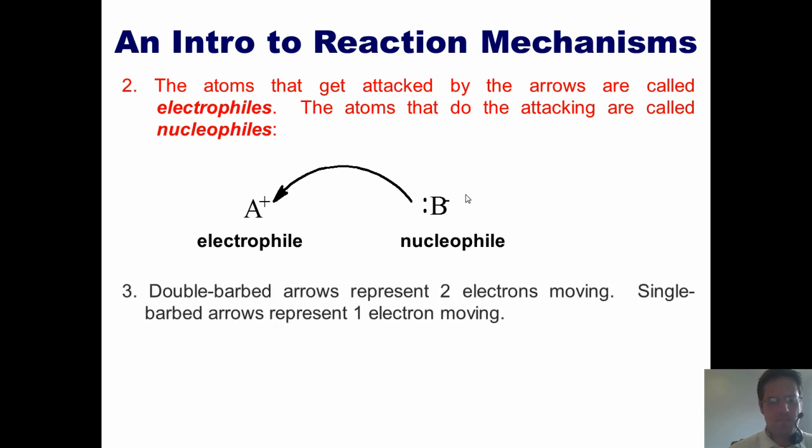Step three, double barbed arrows represent two electrons moving, while single barbed arrows represent one electron moving.